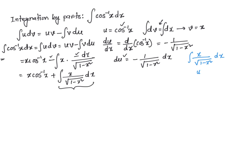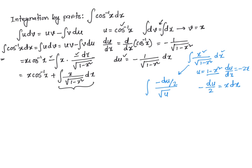Let's say my u is 1 minus x squared. Then du over dx is equal to negative 2x, and du over negative 2 is going to be x dx. So then, x dx is going to be negative du over 2, divided by square root of 1 minus x squared. Remember, 1 minus x squared is u, so it's going to be just u.